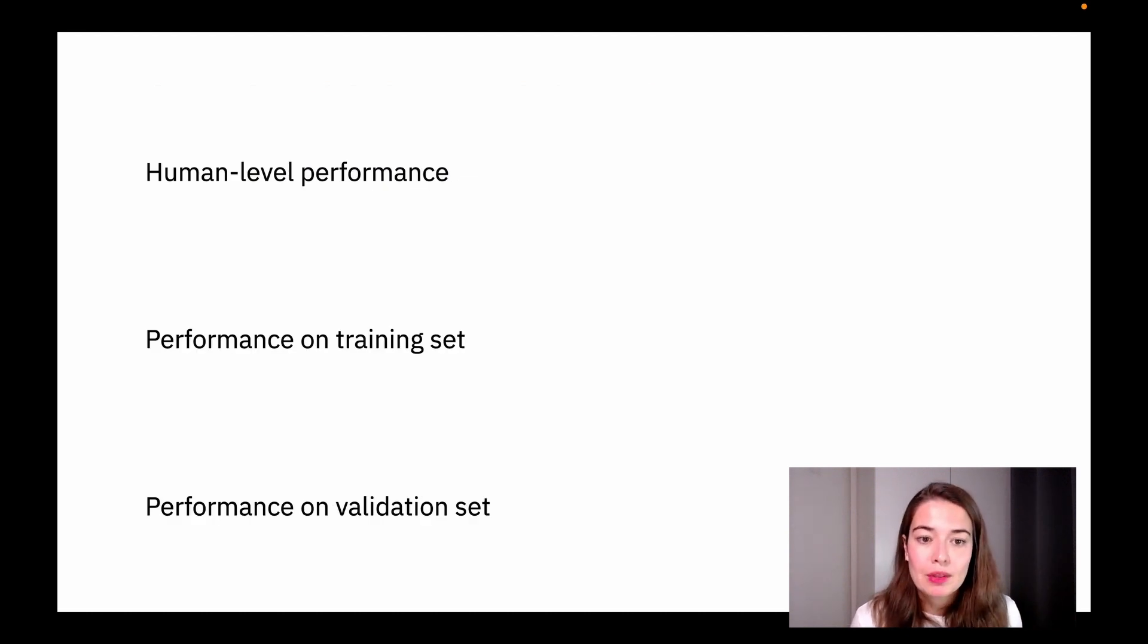So let's look at an example. We have human level performance that we are going to determine what it is. And then we have the performance on the training set, and then we have the performance on the validation set. The reason that human level performance is important is because, as I said, that's going to be the factor that determines what we should do with our model to improve it.